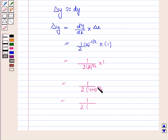2 gets cancelled and we have 20. So this is 1 by 40.